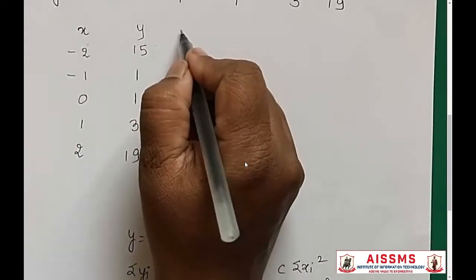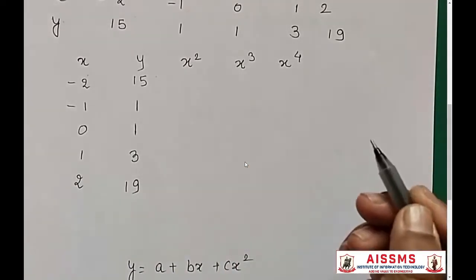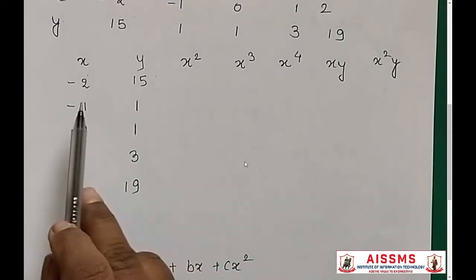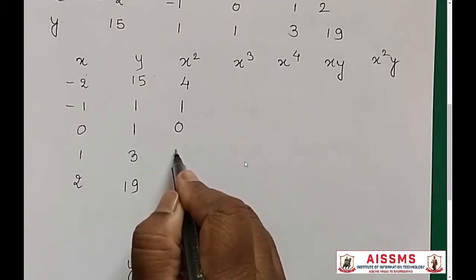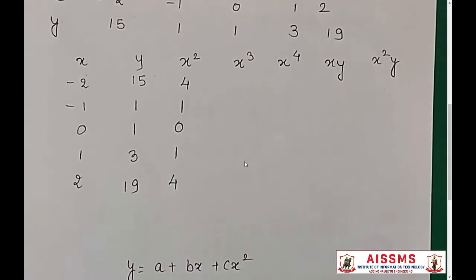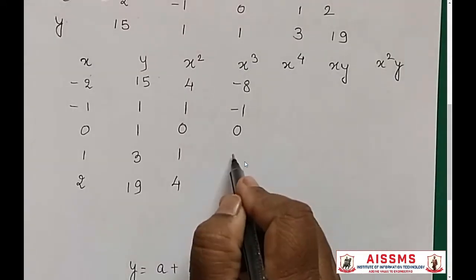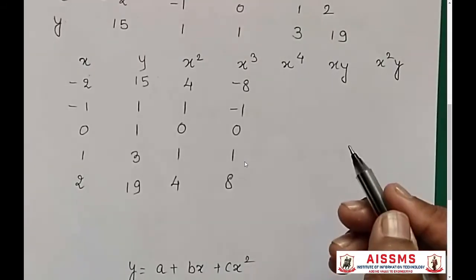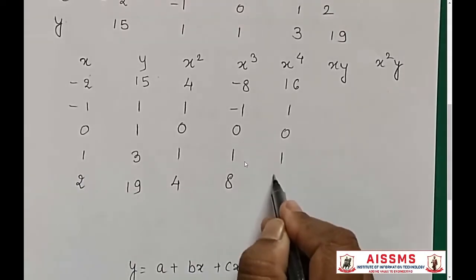To solve the normal equations, you require xy, x²y, x², x³ and x⁴. So let's start. You will write x², x³, x⁴, then xy and x²y. x²: minus 2 squared is 4, minus 1 squared is 1, 0 squared is 0, 1 squared is 1, 2 squared is 4. x⁴: x⁴ is 16, 1, 0, 1, 16.